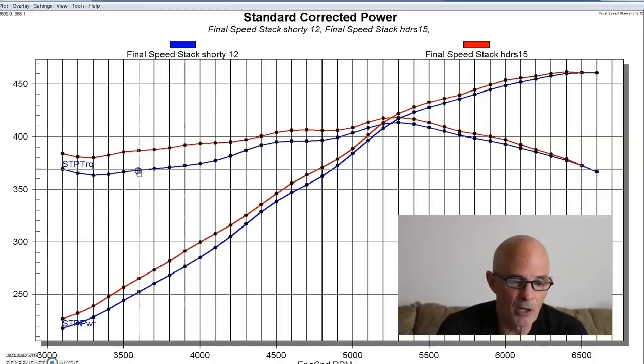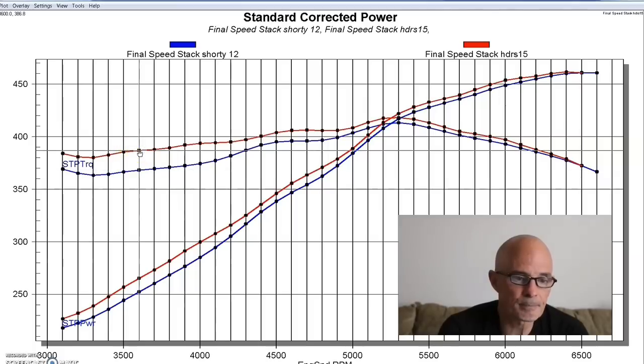And you'll remember we saw big gains down low, not as much up top with the single plane intake. Same thing here. We compared the different headers, big gains down low. We had about 20 foot-pounds down there. Maybe not quite as big a change as with the single plane intake down low but the trend is the same. Bunch of gains down low, not a big gain up at the top.